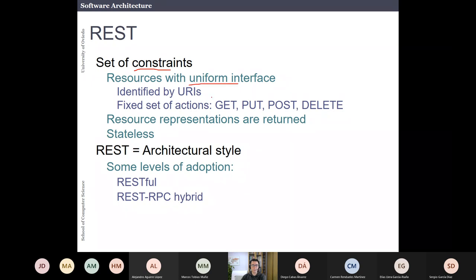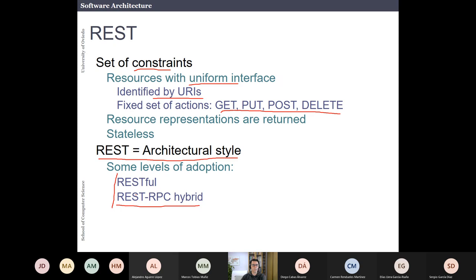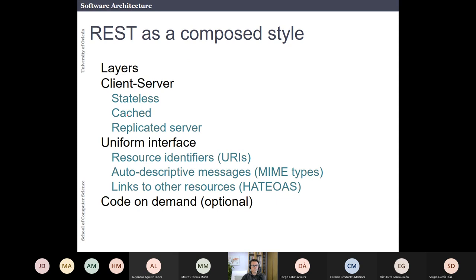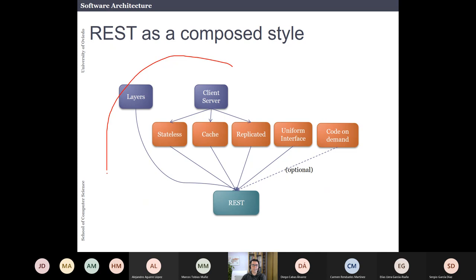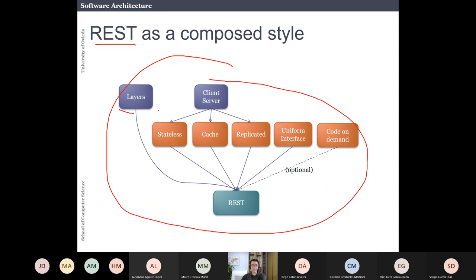The constraints of REST are that resources have a uniform interface, they are identified by URIs, and you have these standard operations. REST is an architectural style with different levels of adoption: hybrid REST, which is a variant of remote procedure call, and RESTful, which is based on resources. REST can be seen as a composed style combining layers, client-server, uniform interface, and code-on-demand. This shows how one software architectural style can be a composition of other architectural styles.